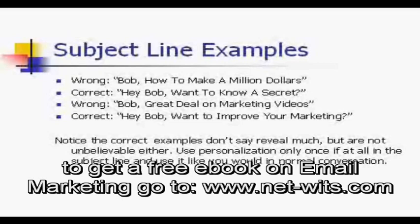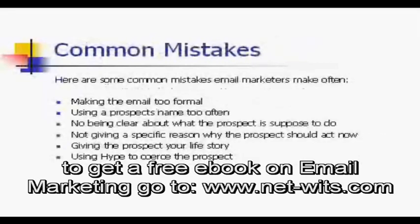Here are some common mistakes that email marketers make. Making an email too formal — keep it conversational. Using a prospect's name too often — when you're talking to a friend or buddy, you don't use their name every sentence, so don't do it in your email either. Not being clear about what the prospect is supposed to do — they need to know exactly what they're supposed to do. And not giving a specific reason why the prospect should act now — you have to give them a reason. Otherwise, even if they're interested, they'll put it off until tomorrow and may end up deleting the email.